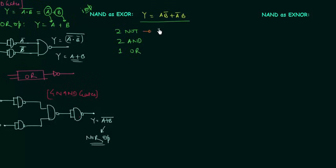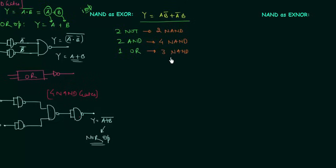For NOT we require two NAND gates, one for each. For AND we require two NAND gates and we have two AND gates, so we will have four NAND gates. For OR we need three NAND gates because we only have one OR gate. So in total we require nine NAND gates to implement the XOR gate.